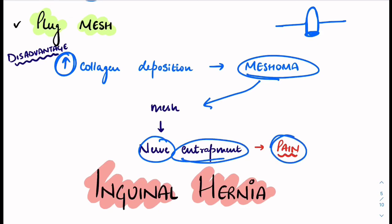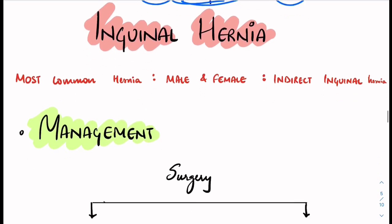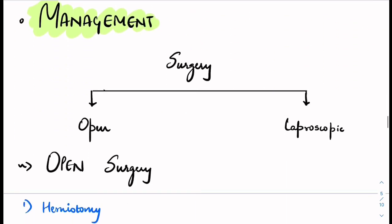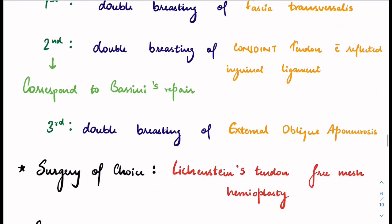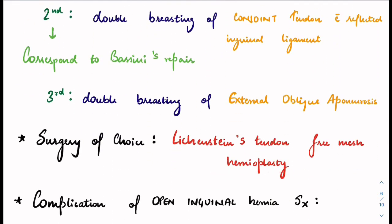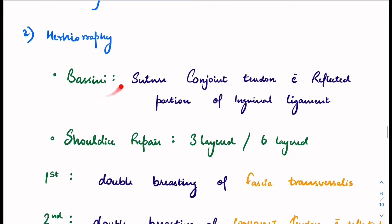Moving on to inguinal hernia and its management: inguinal hernia is the most common hernia in males and females, with indirect inguinal hernia being the more common type. Management can be open or laparoscopic. In open surgery, there are three procedures: herniotomy, herniorafi, and hernioplasty.